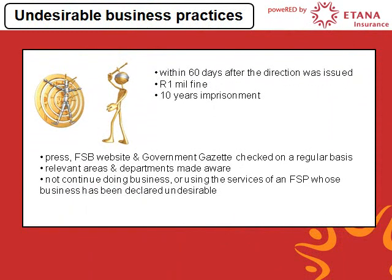In terms of Section 34 of the FAIS Act, the Registrar may declare a business practice undesirable after consultation with the FAIS Advisory Committee. This may be done for a specific FSP or a category of FSPs. Before declaring a business practice as undesirable, the Registrar must first consider the following: the business practice must have or is likely to have a direct or indirect effect resulting in harming the relationship between FSPs or any FSP or category of FSPs and clients or the general public, unreasonable prejudice to clients, deceiving any clients, unfairly affecting any clients, and if allowed to continue, the practice will defeat one or more of the objects of the FAIS Act.